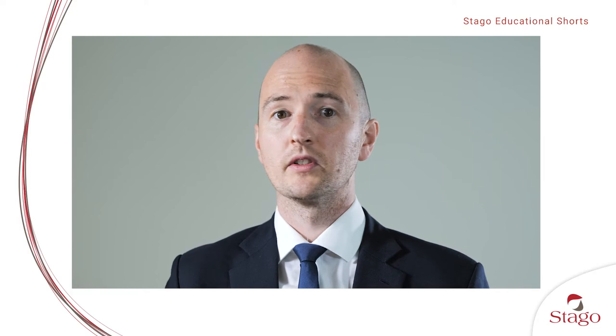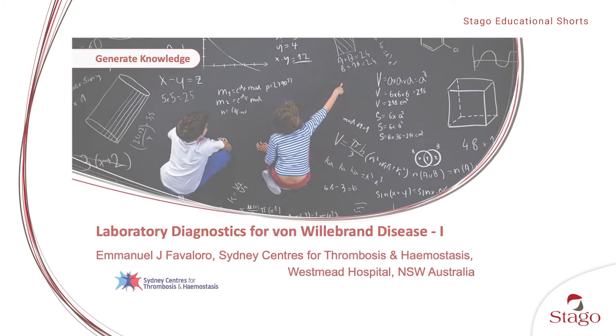Thanks for joining us at this Stego Educational Short. Today we're joined by Dr. Emanuel Favaloro. He is the Principal Hospital Scientist in the Haematology Department at the Westmead University Hospital Laboratories. He has published hundreds of papers on the topics around the field of haemostasis and thrombosis, and he has a special interest in von Willebrand's disease, which he's going to speak to us about today.